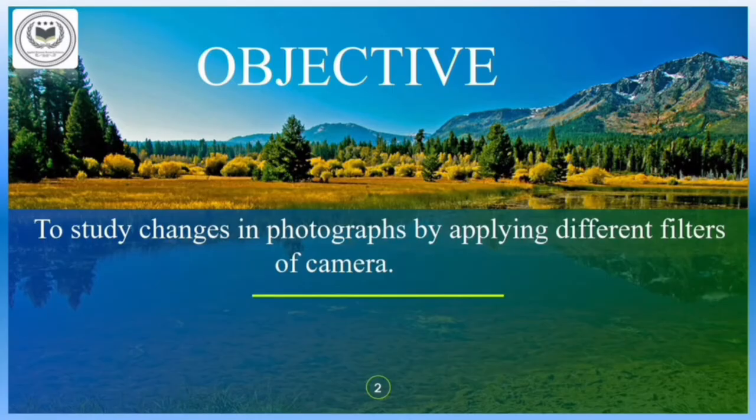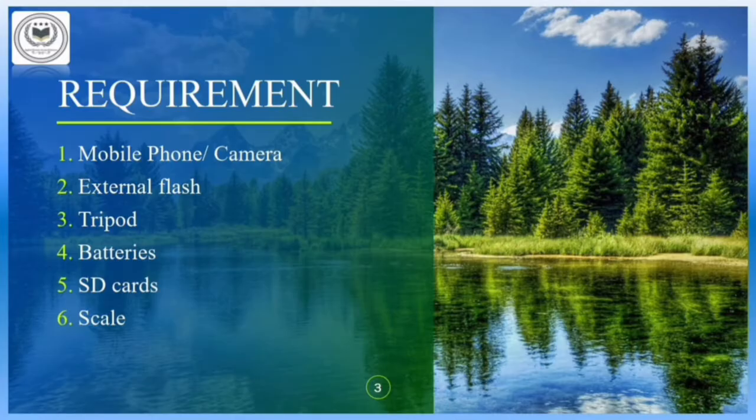The main objective of the Forensic Photography practical is to study the changes in photographs by applying different kinds of filters of camera. The requirements needed for doing this practical are a mobile phone or camera — which can be an SLR — then an external flash to light the crime scene, a tripod stand, batteries, SD cards, and scale.